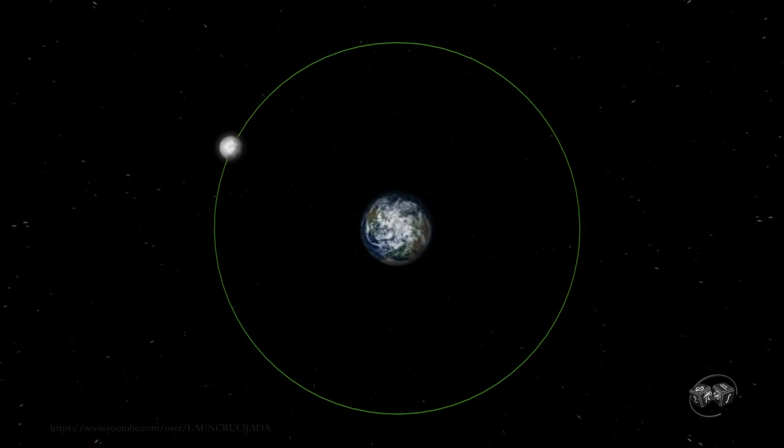For each complete revolution of the Moon around the Earth, the Earth has rotated on itself more than 27 times.